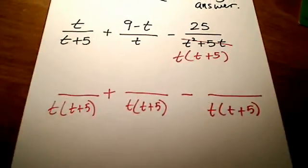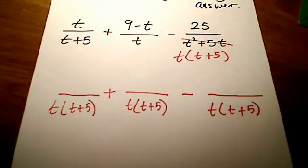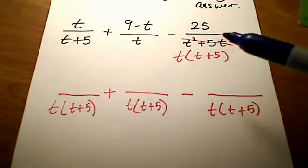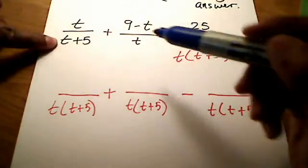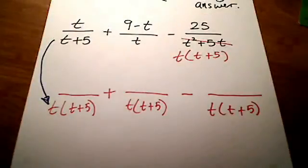All right, so here's what I've got. I've got my LCD, which is both the t and the t plus 5. They are different. They're not the same kind of a t. And then here's the thought process. You're asking yourself, what do you need to do to this denominator? Let's tackle the first one. What do we need to do to that first denominator to make it look like the LCD?